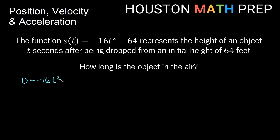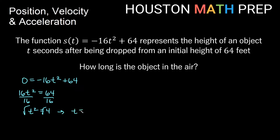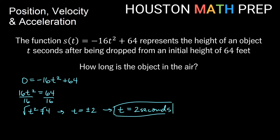We solve: 0 equals negative 16t squared plus 64. Moving the t squared term gives 16t squared equals 64. Dividing both sides by 16: t squared equals 4. Taking the square root: t equals plus or minus 2. Since we start at time zero and don't go backward in time, we ignore t equals negative 2. The object hits the ground after two seconds, so it was in the air for two seconds.